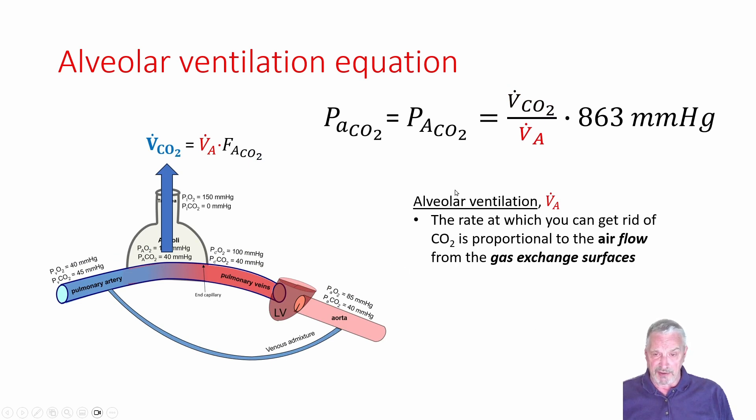Ultimately, you need to get rid of CO2 at the same rate as you make it. And you do this by moving air at some rate out of the body. And some fraction of that air is carbon dioxide. So the multiplication of alveolar ventilation rate flow out of the gas exchange surfaces times the fraction of that air that is CO2 is equal to the rate at which you are removing CO2 from the gas exchange surfaces.